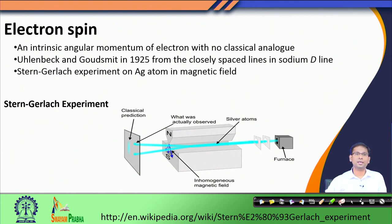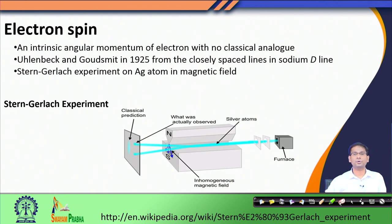It was first discovered in the experiment by Uhlenbeck and Goudsmit in 1925, when they observed splitting in the D line of sodium spectrum. This was the first experimental observation, but the explanation of it could be obtained by the Stern-Gerlach experiment, where an atom was subjected to a magnetic field and then its effect was analyzed.